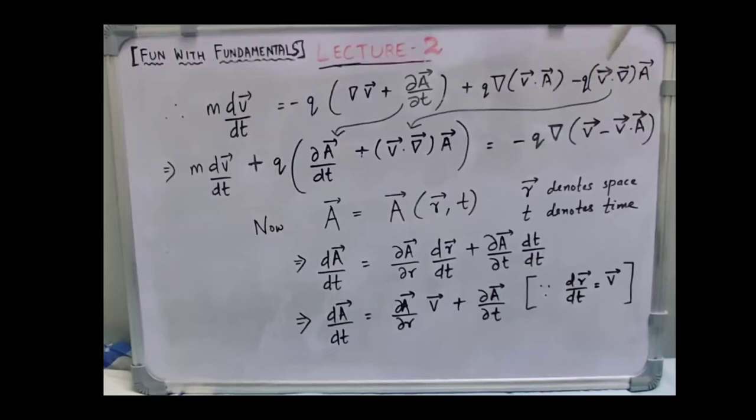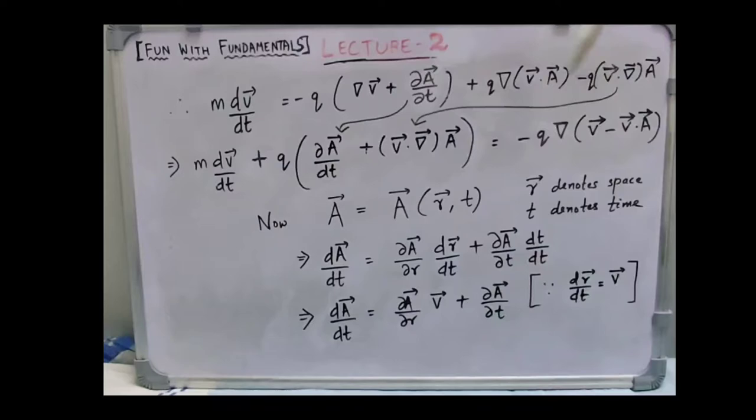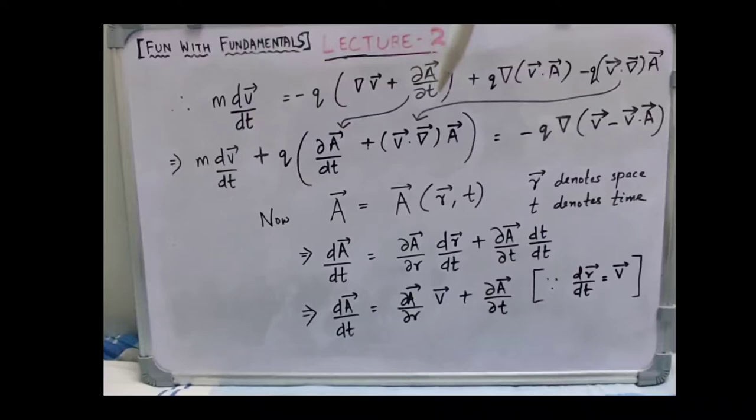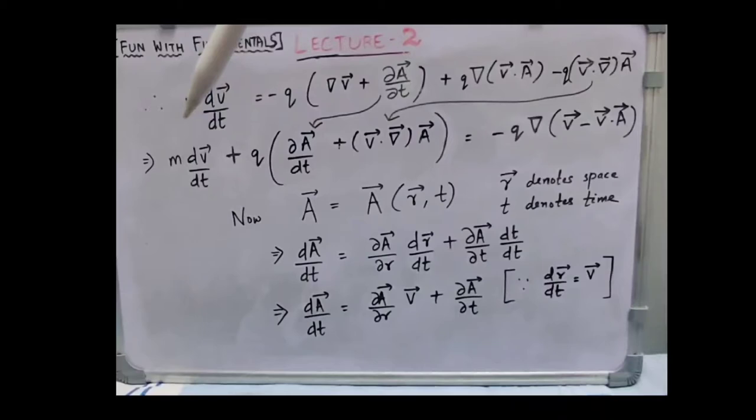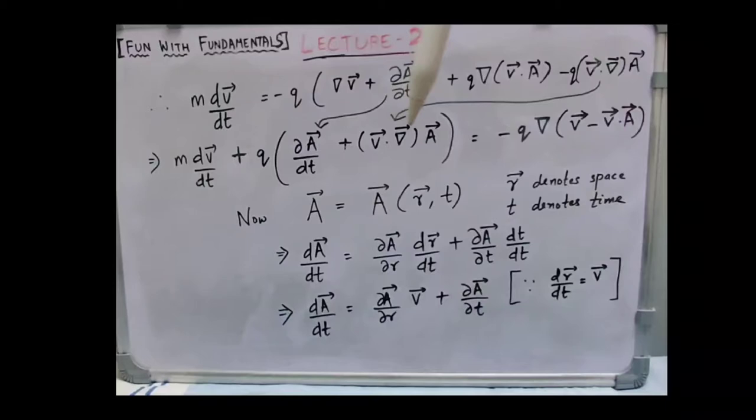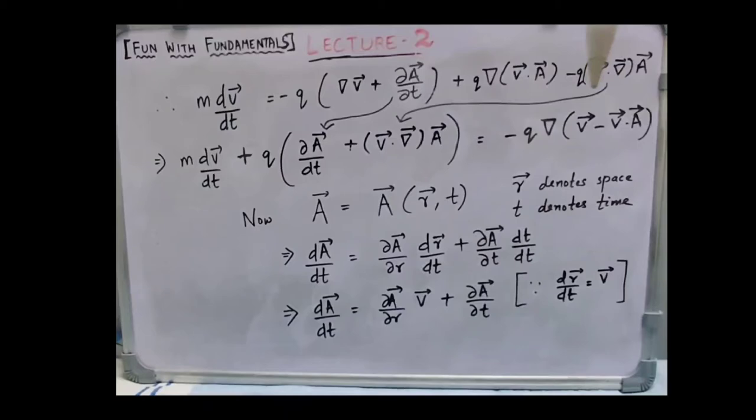Let us rearrange this equation so that it works out better. We will take this term here to the left-hand side and take this term here to the left-hand side. After rearranging, the equation becomes m dv/dt plus q times del A/del t plus V dot gradient times A, is equal to minus q times gradient of V minus V dot A.